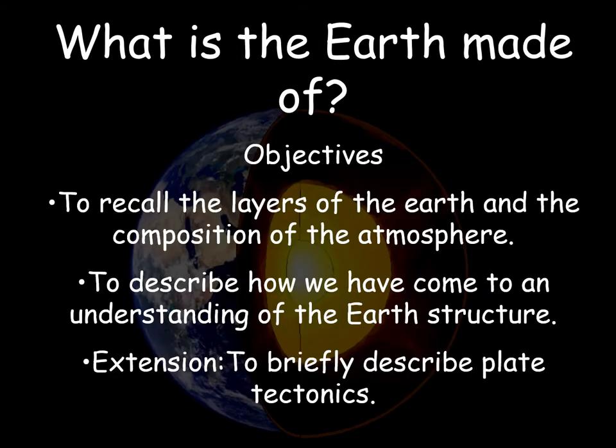Our objectives for our first lesson of earth structure: we're looking at the structure of the earth and its atmosphere. The key learning you need to take away is knowing the internal structure of the earth and the composition of its atmosphere. If you can recall and describe those two features, then you've got the key learning from this lesson.